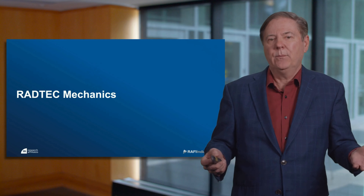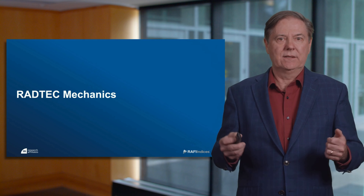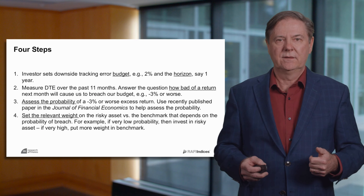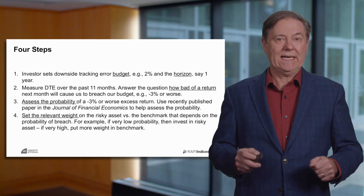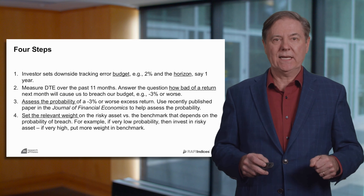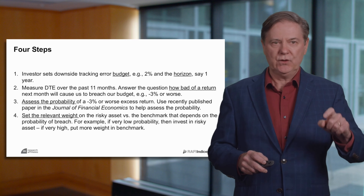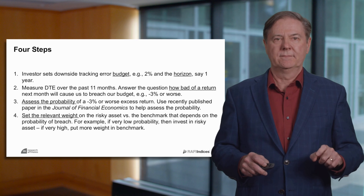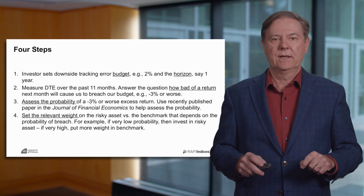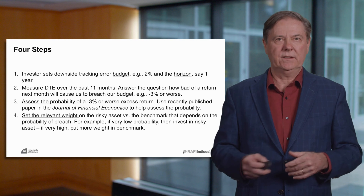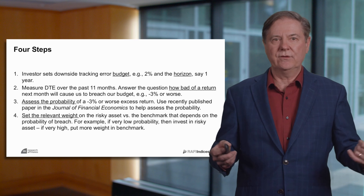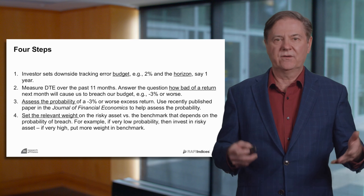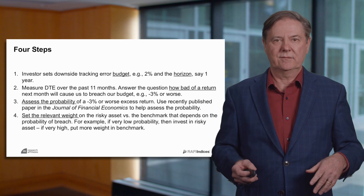So how do we do this? The basic idea is straightforward. Number one: you set a downside tracking error budget. Downside tracking error — you just look at the periods where you underperform and take the volatility. So you set the budget, let's say two percent. You need a horizon — you choose it, whether it's two years, one year, six months. Let's say it's 12 months.